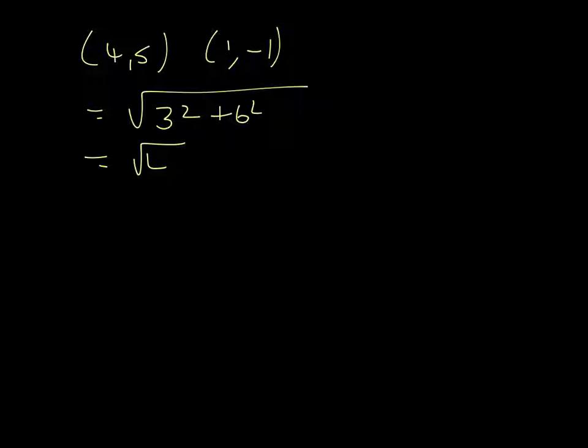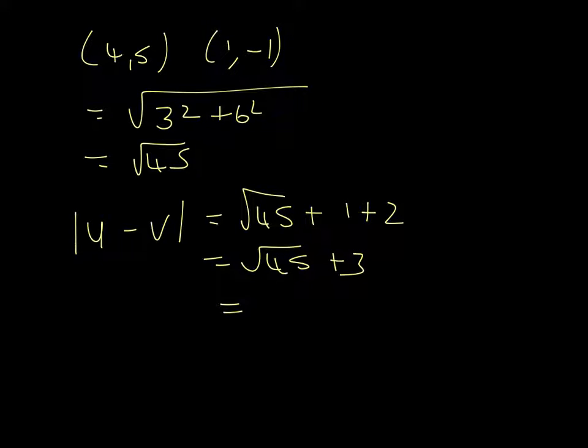We'll now start by working out the distance between the two centers. That's the square root of 3 squared plus 6 squared. That is root 45. And the maximum of the difference between the two points will be root 45 plus the two radiuses. Root 45 plus 3. Root 45 is 9 times 5. So that's 3 root 5 plus 3.